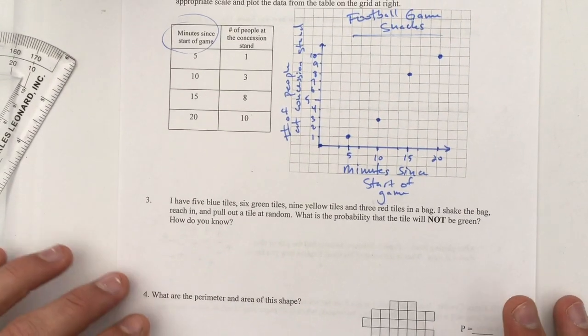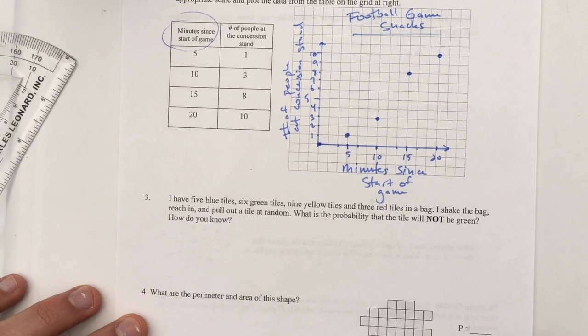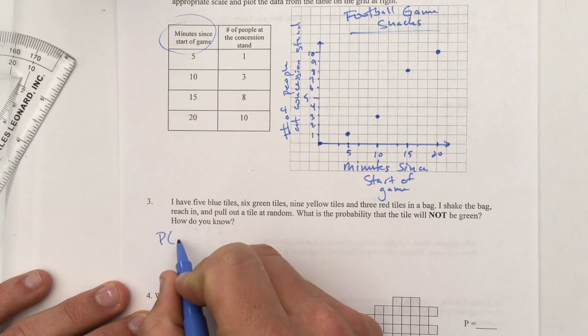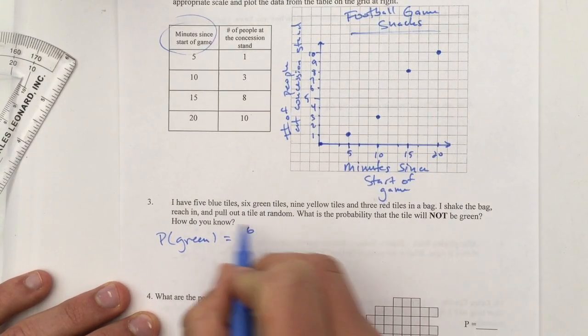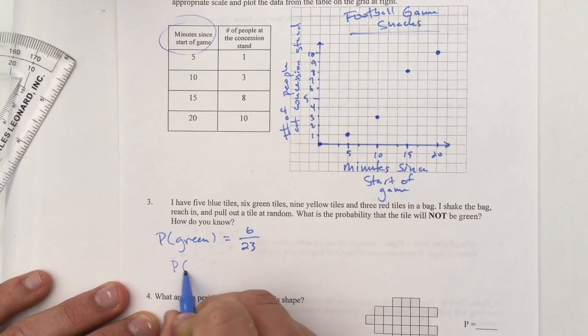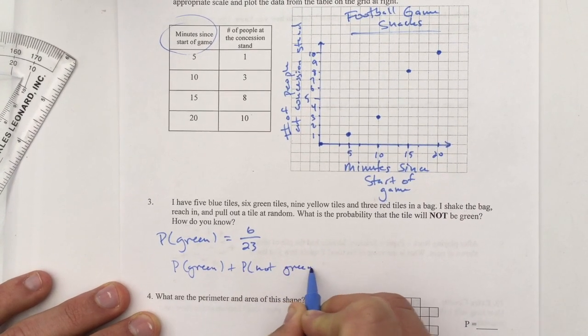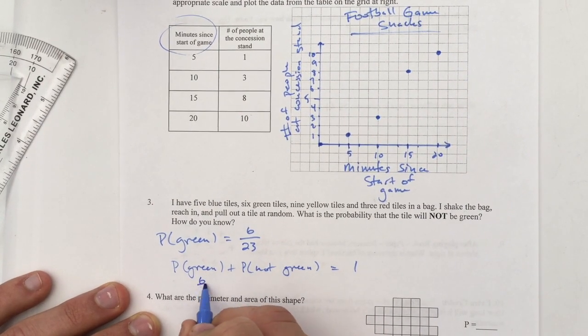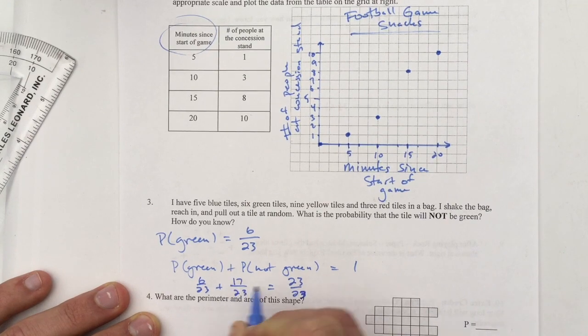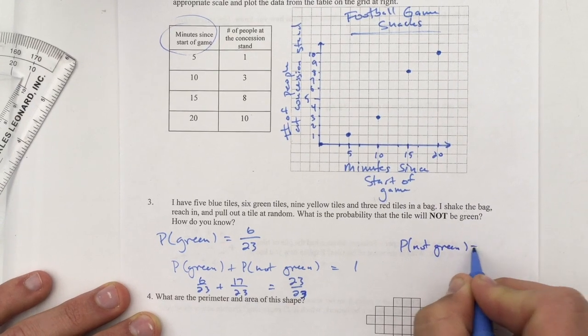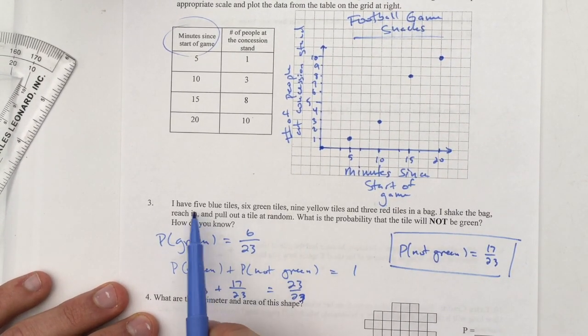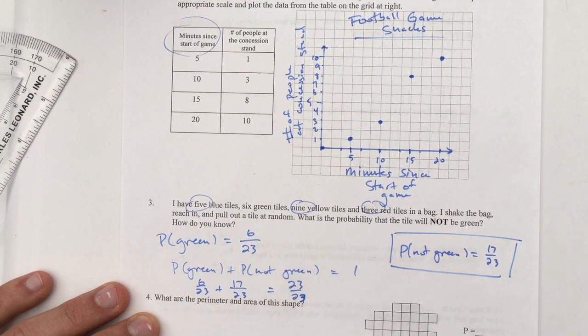Moving on. I have five blue tiles, six green tiles, nine yellow tiles, and three red tiles. I shake the bag, reach in and pull out a tile at random. What is the probability that the tile will not be green? How do you know? Let's find out the probability of getting a green tile. That is six out of, if I add all these up, five plus six is 11 plus nine is 20 plus three is 23. I know that probability of green plus probability of not green has to equal one because it's either green or not green. So I have 6/23 plus something equals 23/23. That is 17/23. So probability of not green equals 17/23. You could have also just added all the other tiles: five, nine, and three and gotten that as well.